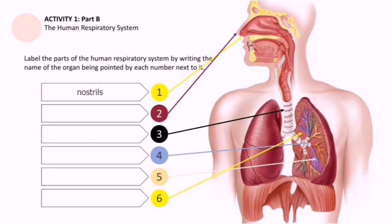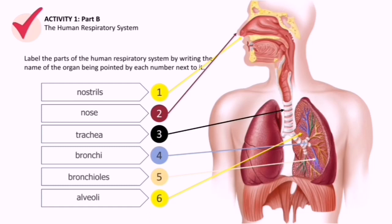Let's now deal with the answers. Number one is nostrils. Number two, the nose. Number three, trachea. Number four is bronchi. Number five is bronchioles. And number six is alveoli. Count the number of correct answers and please write your score on the upper right corner of your answer sheet. That ends Activity Number 1, Part B, the Human Respiratory System.